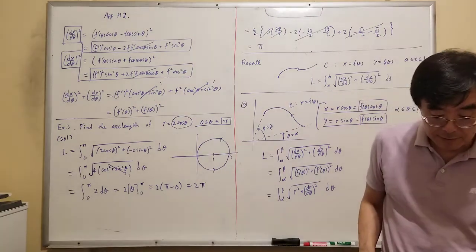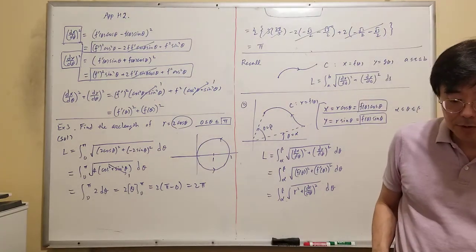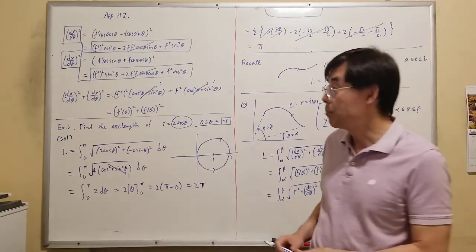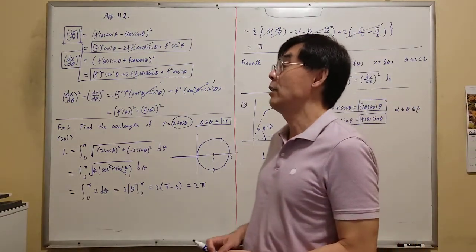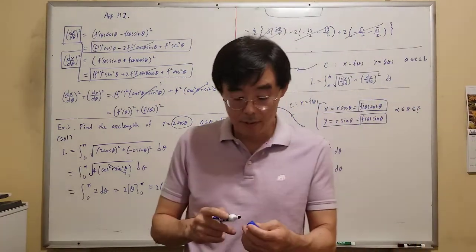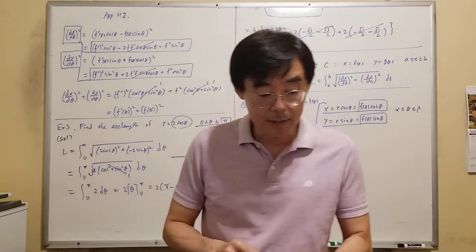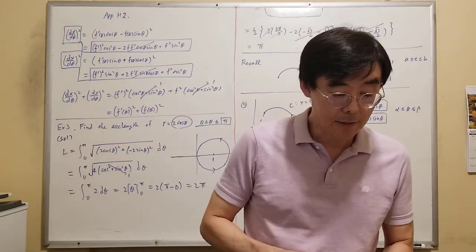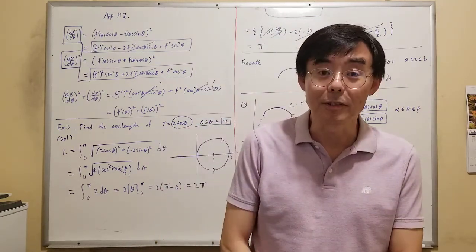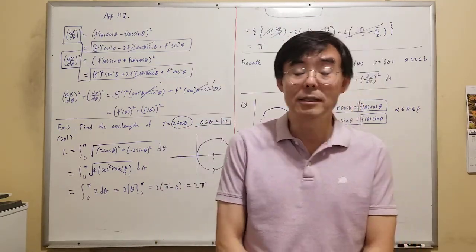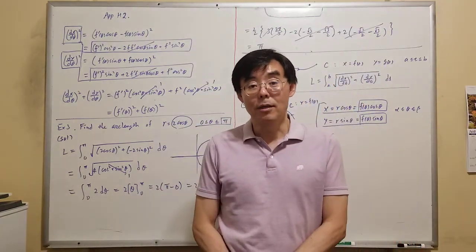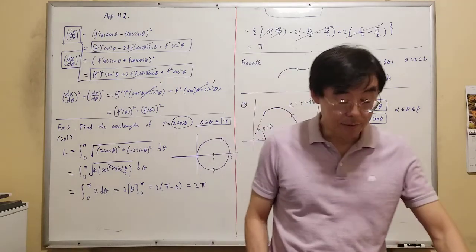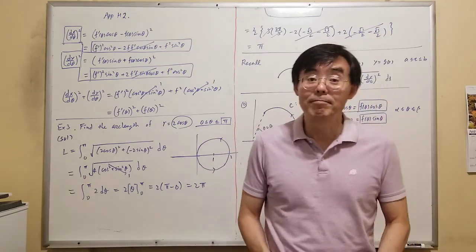This is the end of Section Appendix H2: Area and Arc Length in Polar Coordinates. I will see you next time.